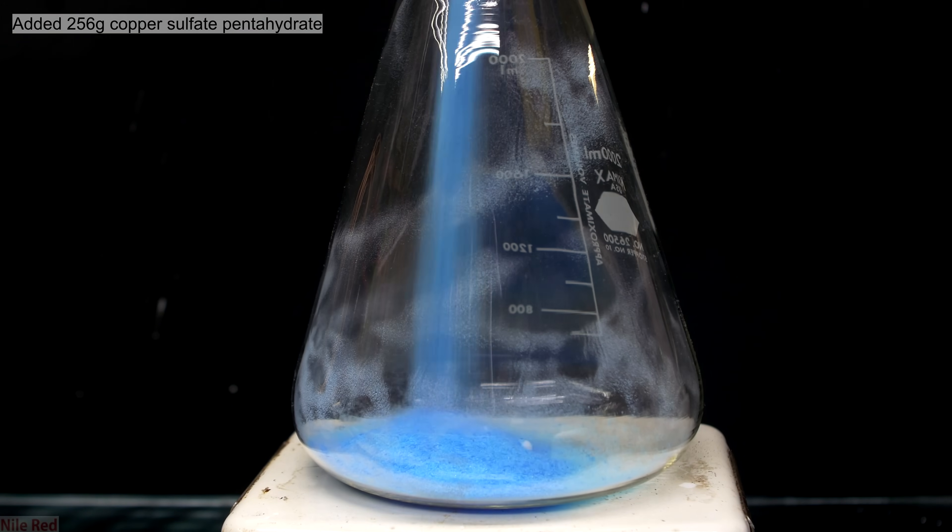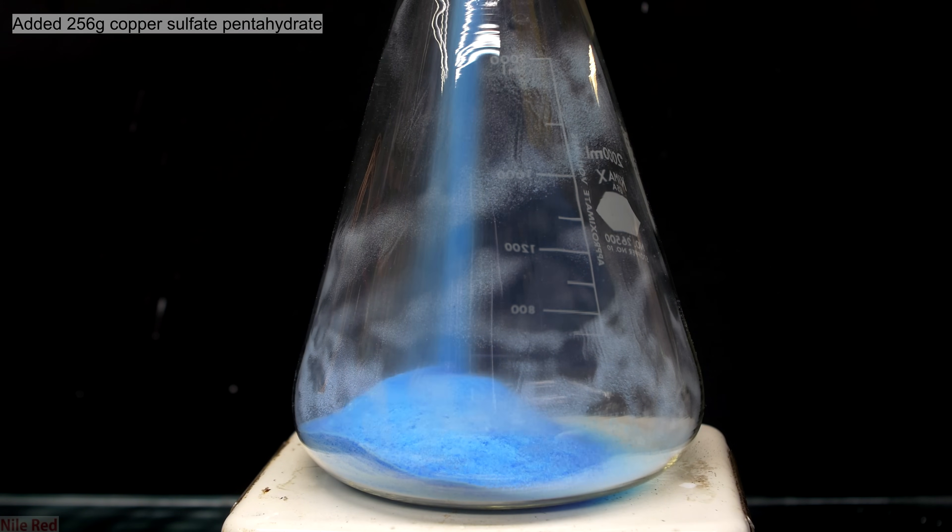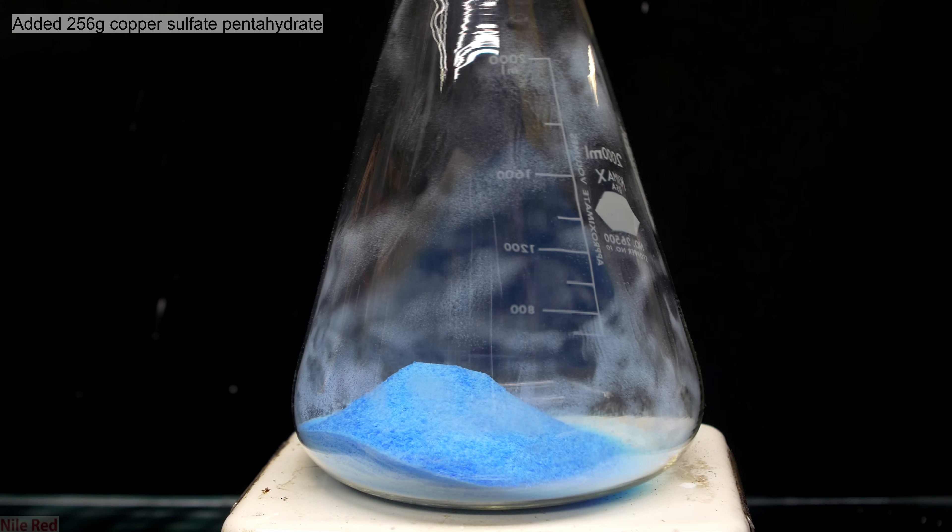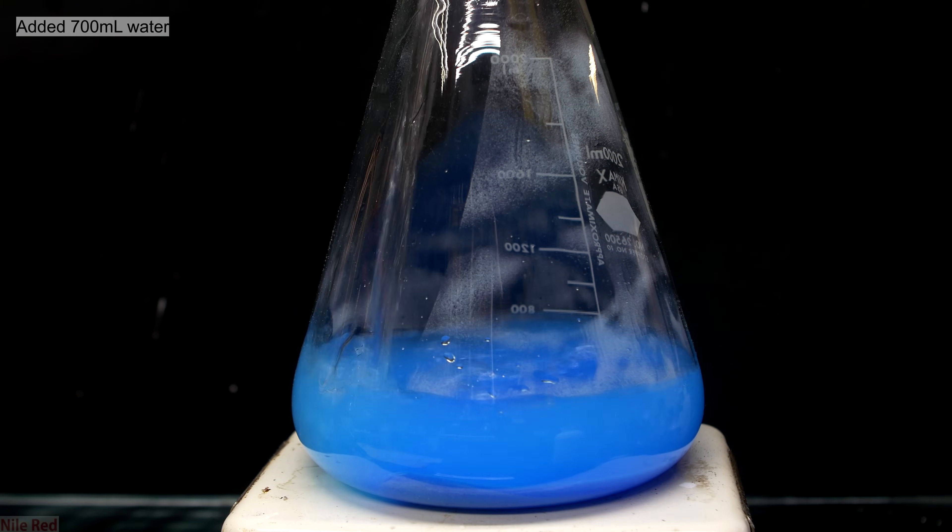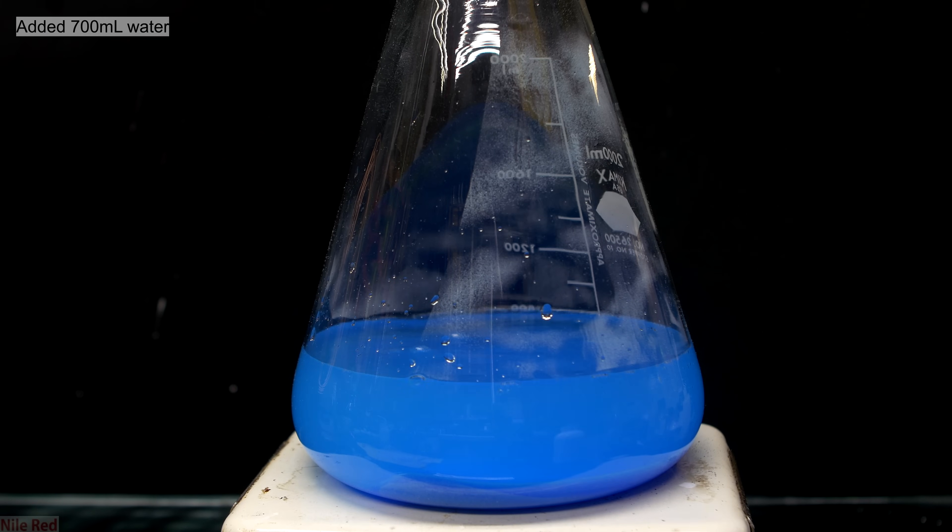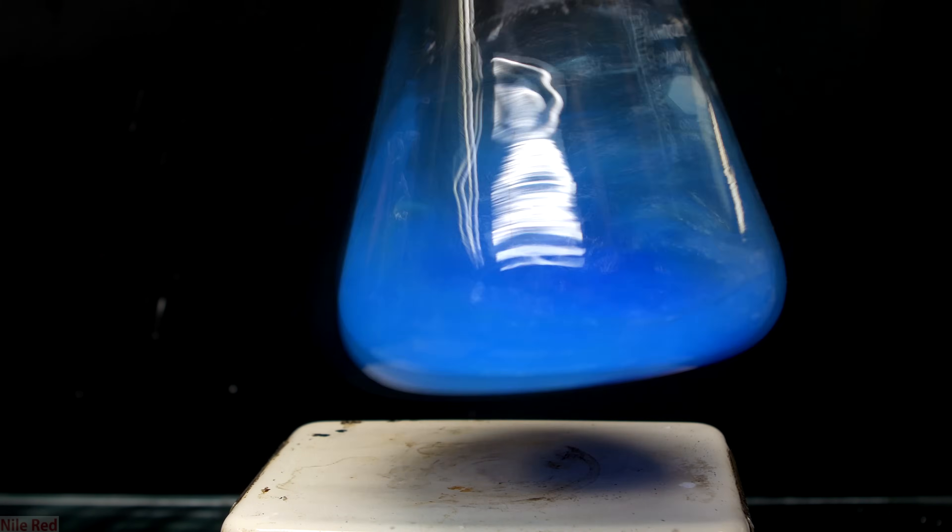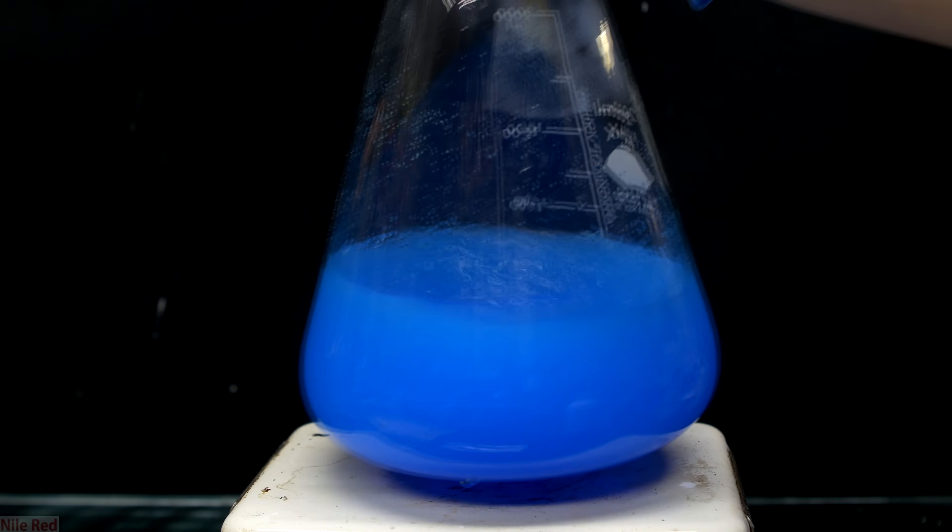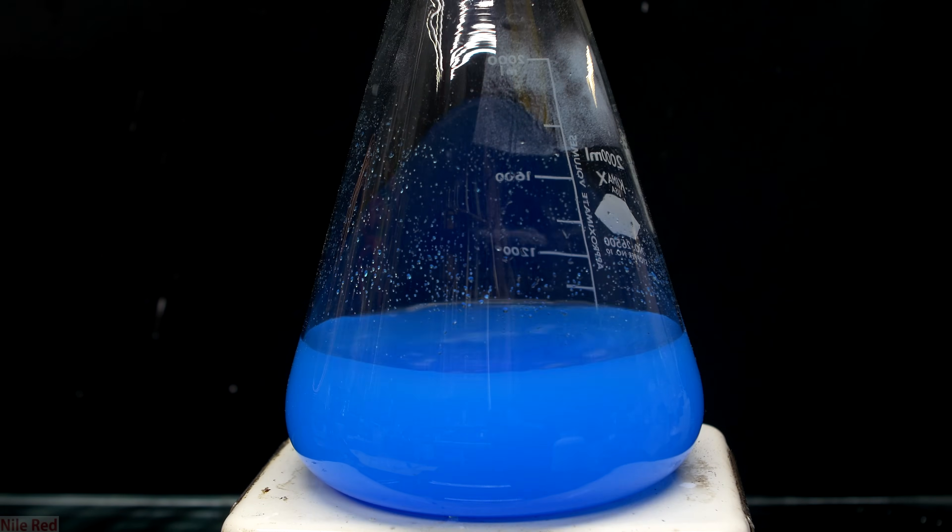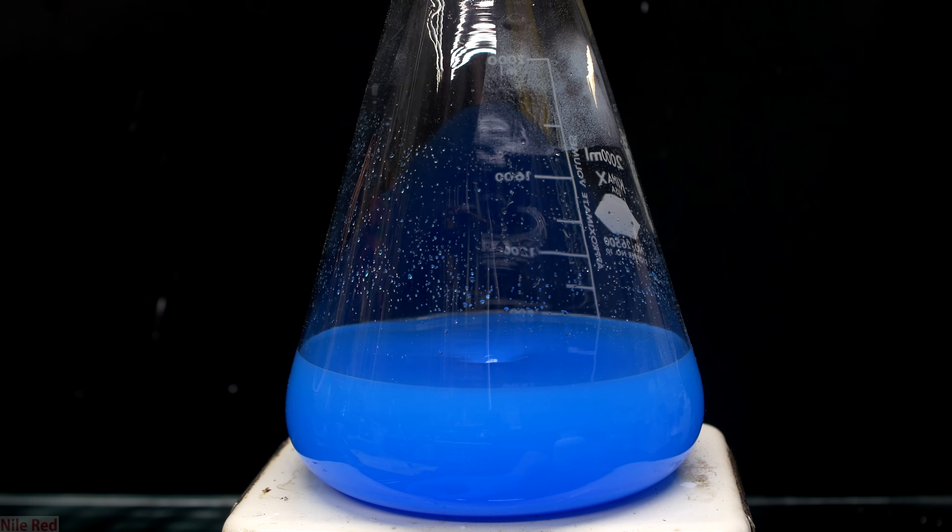256 grams of copper sulfate pentahydrate was weighed out and added to a flask. On top of the copper sulfate, I then poured in about 700 milliliters of distilled water. I pick up the flask and swirl the contents to try to mix everything up as much as possible, but a lot still remains undissolved. In order to dissolve everything, we're going to have to heat it up, so I turn on the hot plate and start the magnetic stirring.